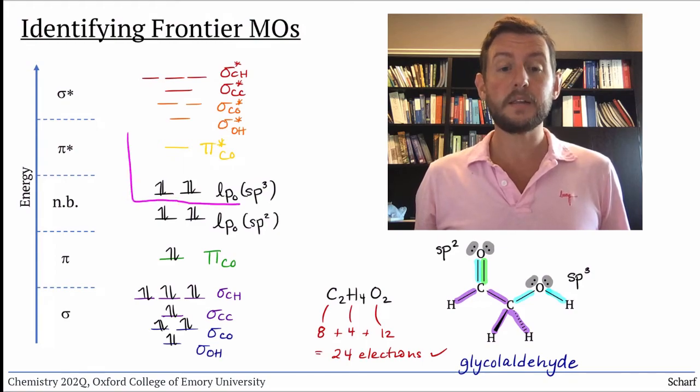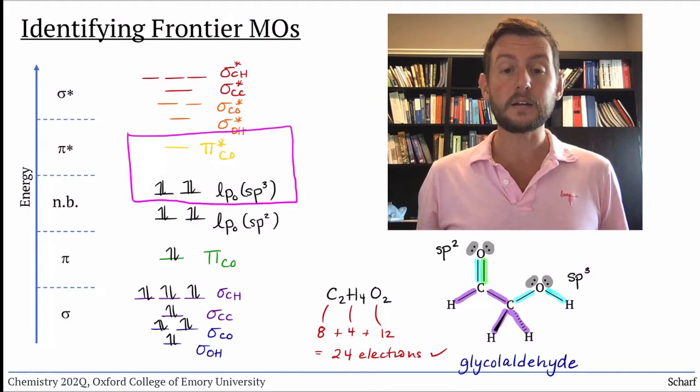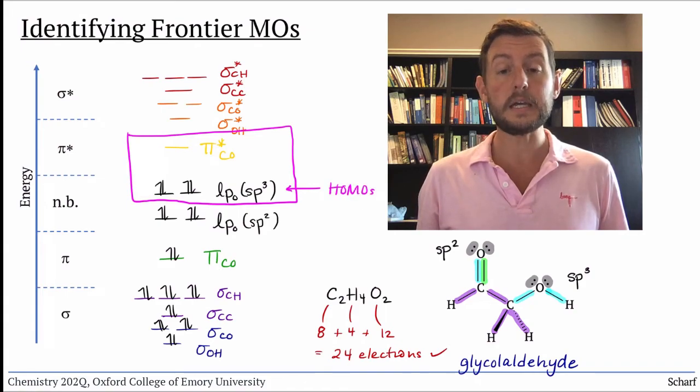The frontier molecular orbitals are here. The HOMOs are the sp3 lone pairs, and the LUMO is the CO-pi-star orbital.